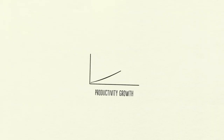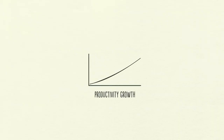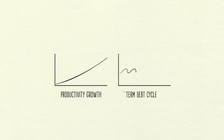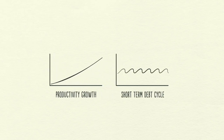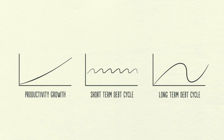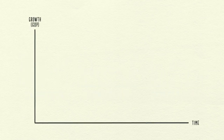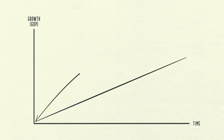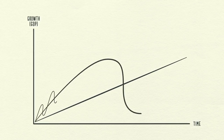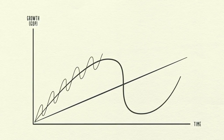Number one, productivity growth. Number two, the short-term debt cycle. And number three, the long-term debt cycle. We'll look at these three forces and how laying them on top of each other creates a good template for tracking economic movements and figuring out what's happening now.